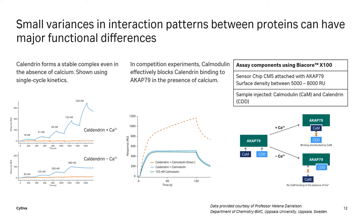How can we tell that from the middle sensorgrams? Looking at the middle figure, we can see that the binding curve from injection of calmodulin in the presence of calendrin, shown in blue, does not overlay with the simulation of the theoretical signal under non-competitive conditions, shown as a red dashed line. Instead, it overlays with the binding response obtained from injection of calmodulin alone, shown in green. The study confirms that calendrin and calmodulin interact with the target at overlapping binding sites, but exhibit different interaction characteristics, with calendrin being able to form a stable complex even in the absence of calcium. In summary, this study shows the importance of in-depth understanding of mechanisms and kinetics, and that small variances in interaction patterns between proteins can have major functional differences.